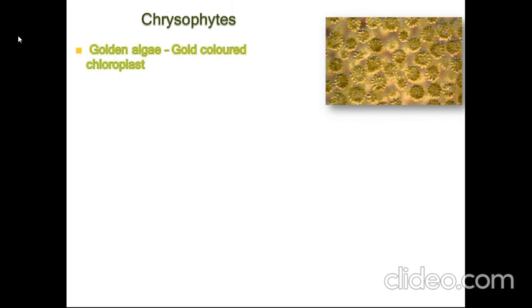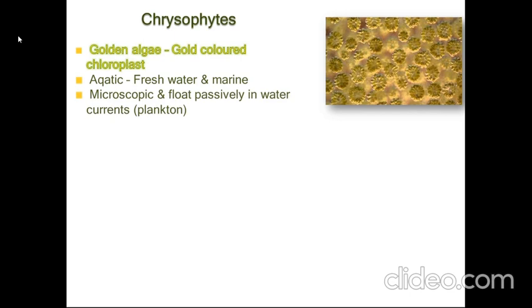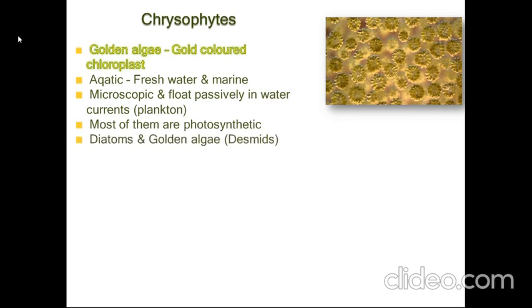Let's start with chrysophytes. They are also known as golden algae because of their gold-colored chloroplasts. They are aquatic, found in fresh water and marine water. They are microscopic and float passively in water currents, so they are planktons. Most of them are photosynthetic and can make their own food. Diatoms and golden algae or desmids are some examples.